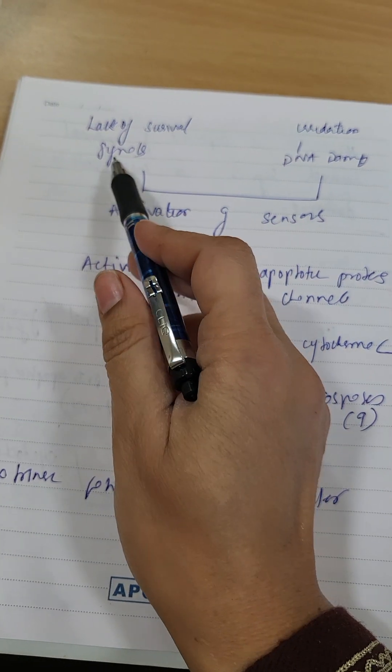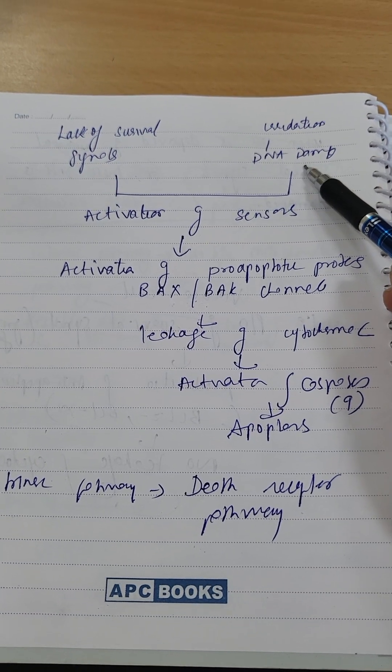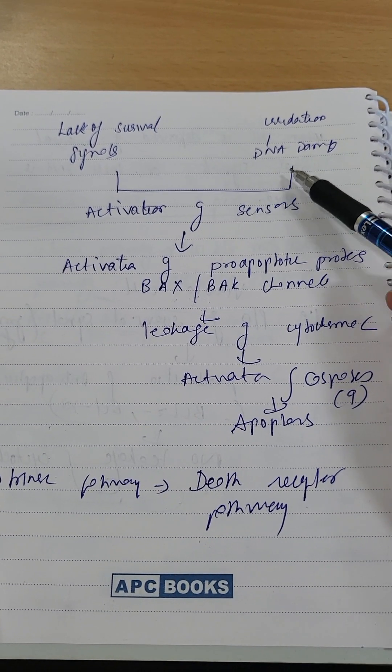Now let's talk about damaged cell or old cell. What will happen? Lack of survival signals, meaning growth factors are not present, or any cell with radiation or DNA damage.